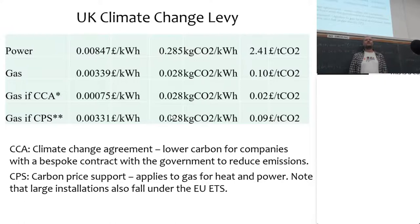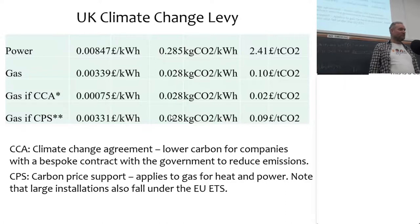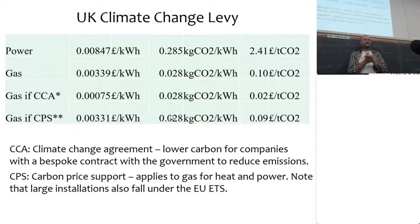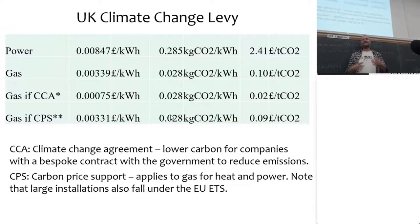So we immediately see the equimarginal principle is violated: CO₂ is CO₂, but some companies pay £2 and others pay 2 pence. Those climate change agreements are negotiated between the company and the Department for Environment, Food and Rural Affairs — involving lots of civil servants going around negotiating contracts. If you're the civil servant in charge of this, it's a wonderful plan because you have lots of negotiators and inspectors working for you — you're important in Whitehall. The alternative would have been a simple excise duty on energy, which would have involved perhaps two civil servants to administer.